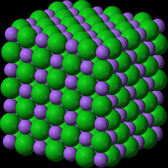In chemistry, an ionic compound is a chemical compound composed of ions held together by electrostatic forces termed ionic bonding. The compound is neutral overall, but consists of positively charged ions called cations and negatively charged ions called anions.